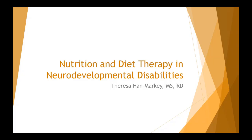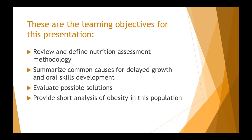At the other end of the spectrum, overnutrition can lead to reduced participation in educational and social activities, in addition to other stigma these children may experience. It also makes caregiving — activities of daily living such as bathing and toileting — more difficult. Over the next few minutes we'll review nutrition assessment methodology, causes of delayed growth, poor oral skills development, possible solutions, and a short analysis of obesity in this at-risk population.